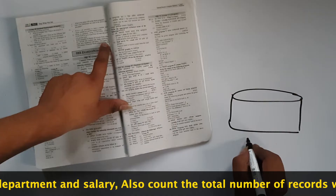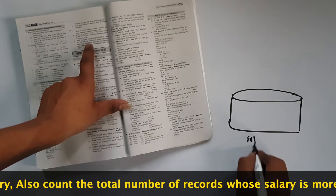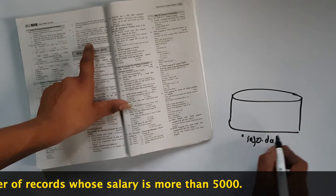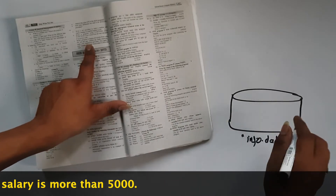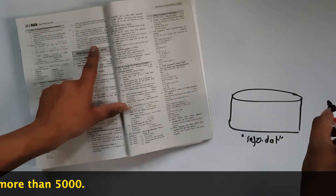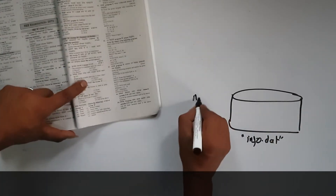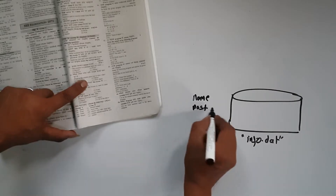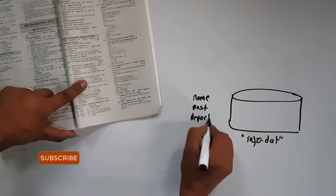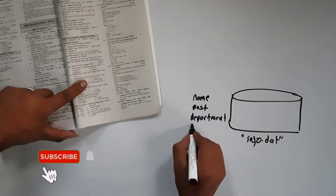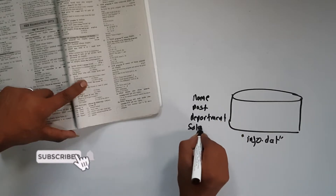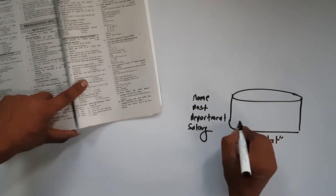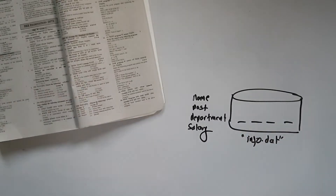The file is called info.dat. Essentially, this file contains the following fields: the name of the employee, the post of the employee, the department of the employee, and the salary of the employee.